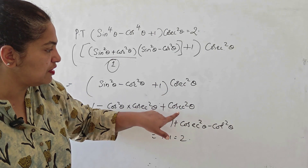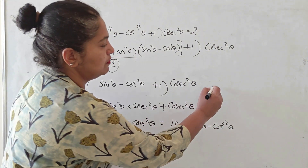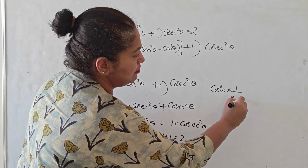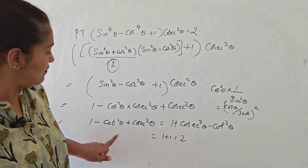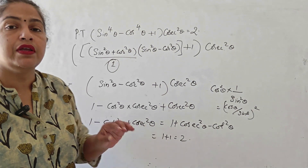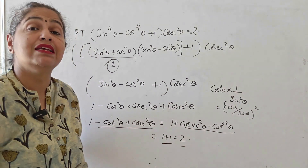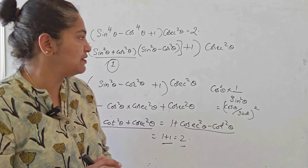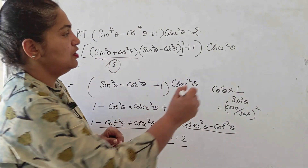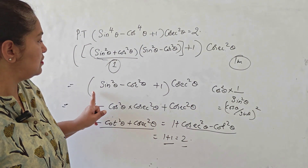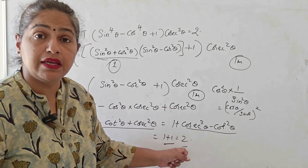So I have 1 minus cos²θ × cosec²θ plus cosec²θ. Now cos²θ × cosec²θ = cos²θ/sin²θ = (cos θ/sin θ)² = cot²θ. Using the identity cosec²θ − cot²θ = 1, I get 1 − cot²θ + cosec²θ = 1 + (cosec²θ − cot²θ) = 1 + 1 = 2. For the mark split: applying a² − b² identity is one mark, writing the simplified form is one mark, and opening the bracket and solving to get 2 is one mark.